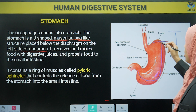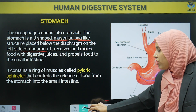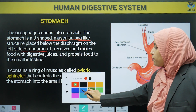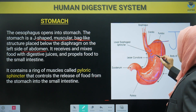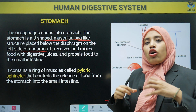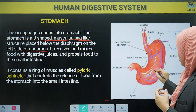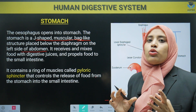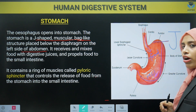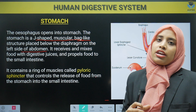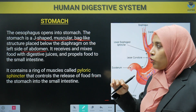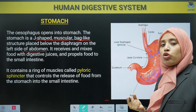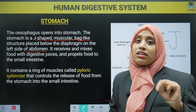The stomach receives and mixes food. What comes into the stomach? Food comes from the mouth, through the esophagus, and food particles enter here. A lot of hydrochloric acid is secreted from the inner lining of the stomach. Many chemical reactions take place there and finally the process of digestion continues. So the stomach receives and mixes food with digestive juice.